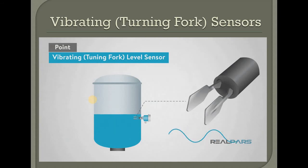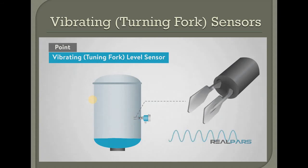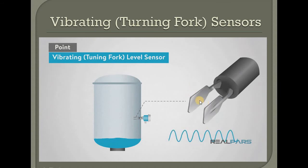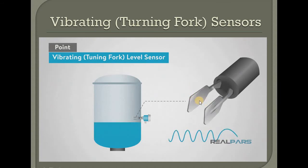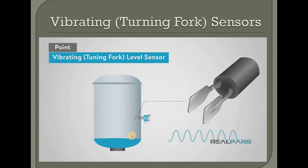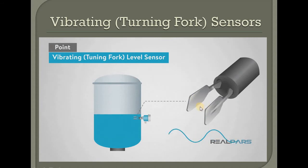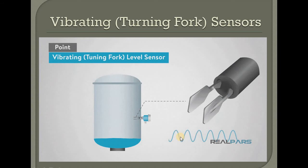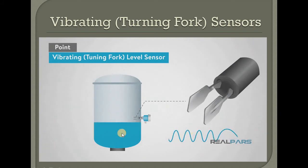The next one is vibrating or tuning fork sensors. This is a vibration-based sensor. This vibration is very slow. This wave will become different when the medium changes.